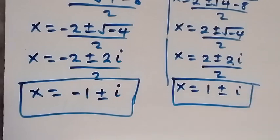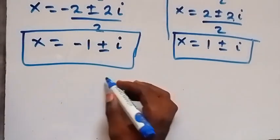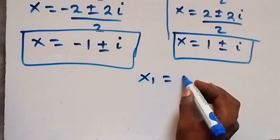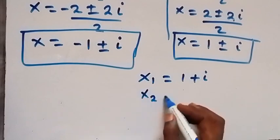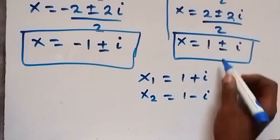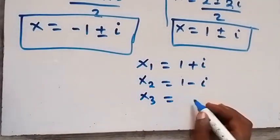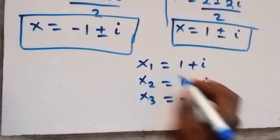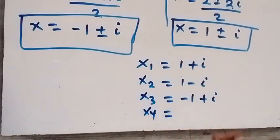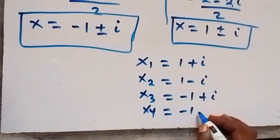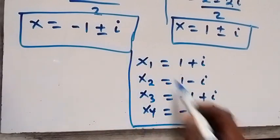We now have four solutions altogether. x₁ = 1 + i, x₂ = 1 − i from the second equation, x₃ = −1 + i, and x₄ = −1 − i from the first equation. So we have these four solutions for this problem.